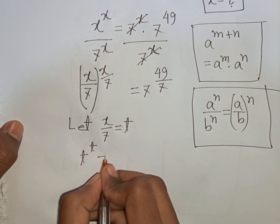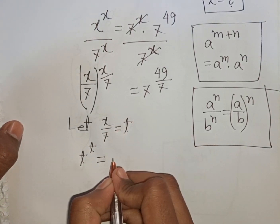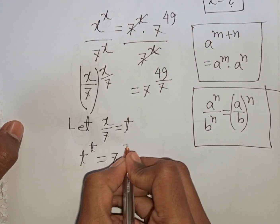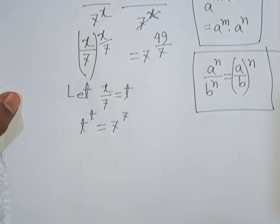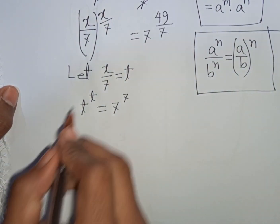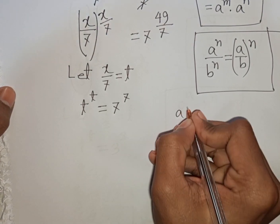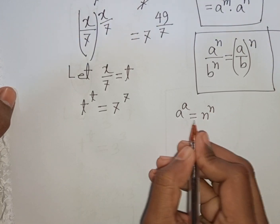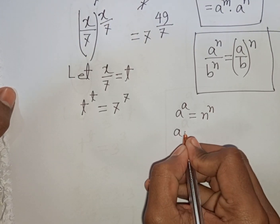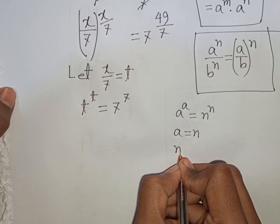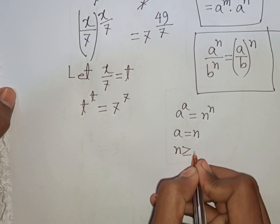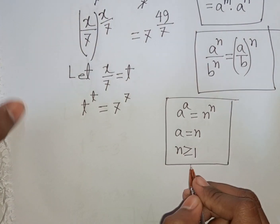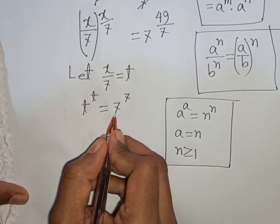t^t equals 7^49 divided by 7, which means it equals 7^7. Now applying the rule that if a^a = n^n then a = n, we can compare and conclude that t = 7.